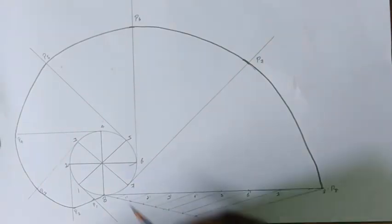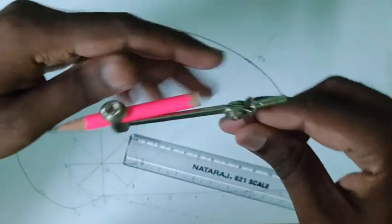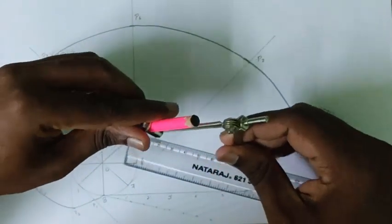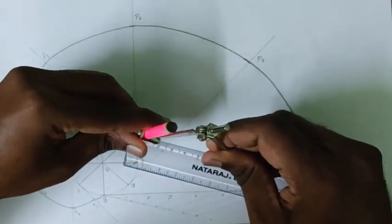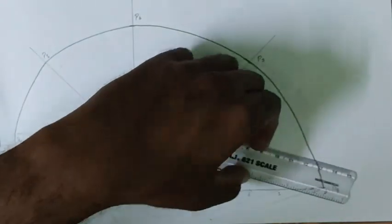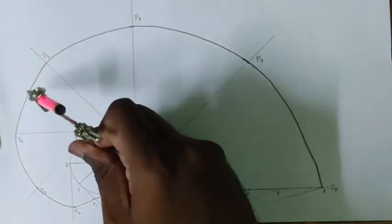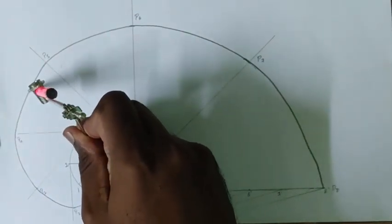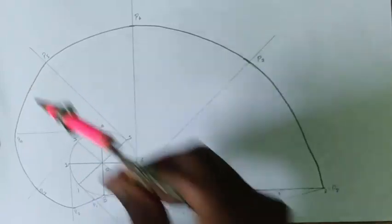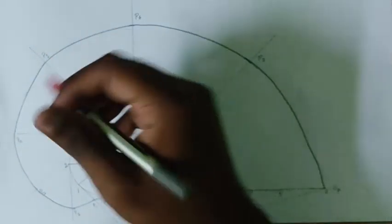We need to draw the tangent and normal at 80 mm from this center. So let us take 80 mm in our compass and find where the point lies. So this will be the point where the tangent and normal comes.